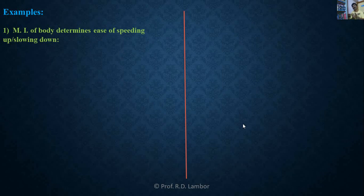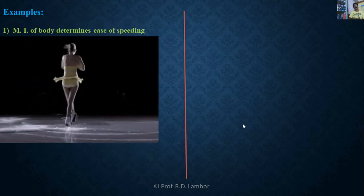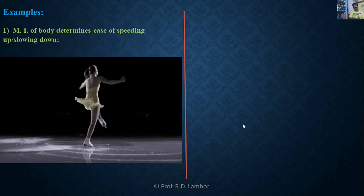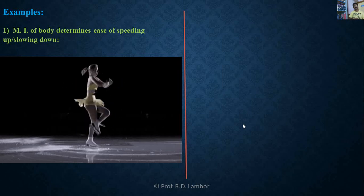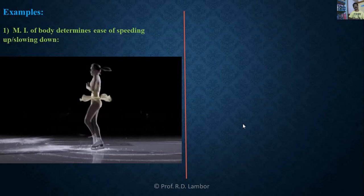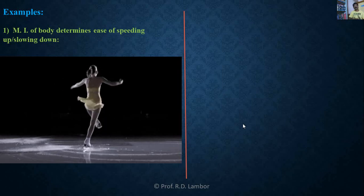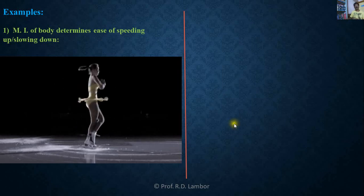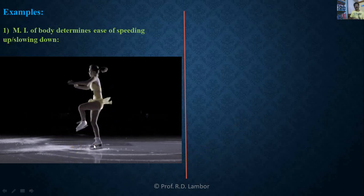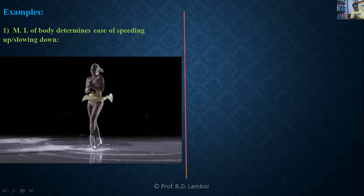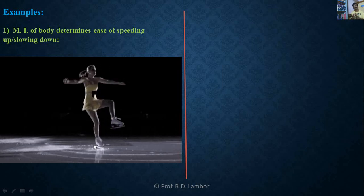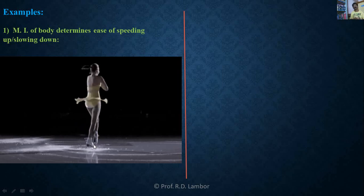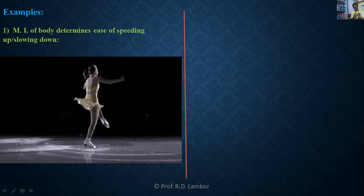Before explaining, first of all see this animation. Look clearly at the positions of legs and hands. This athlete is spinning on one leg, as you can see here. Notice the speed of spin motion — when it is maximum and when it is minimum.